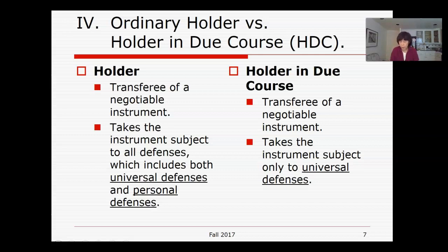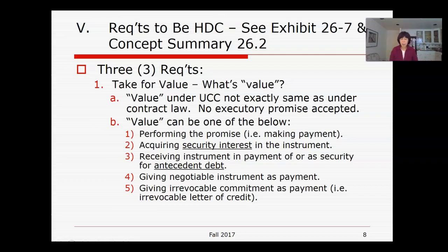We will not learn all the detail of these defenses until the next chapter, but keep this in mind as we go through and learn how a transferee becomes a holder in due course. There are three requirements under the Uniform Commercial Code. I'm going to go through these three requirements first, and then I have a diagram from your textbook which is very useful in understanding this concept.